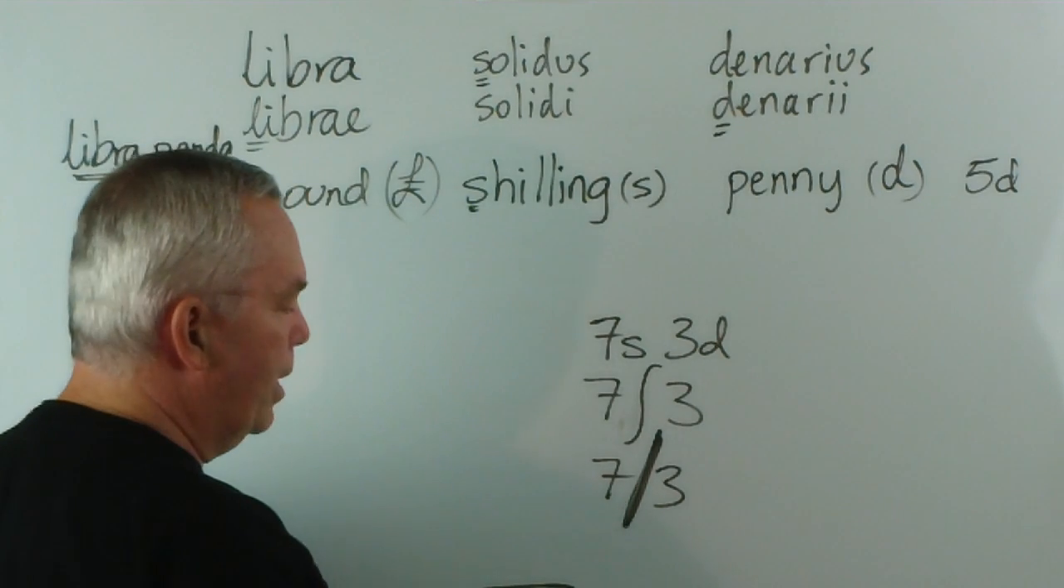An S was written like this, which is where, if you understand senior mathematics, where we get our integral sign from, because it's an S for sum, to add things up. But we're getting ahead of ourselves there. But this was the old-fashioned S, so seven shillings and three pence. And gradually, as that was written faster and faster, it became that. And this line that you see underneath the question mark on your keyboard is still called a solidus. That's where it came from. It used to be an old-fashioned S, a solidus, for shilling or solidi.